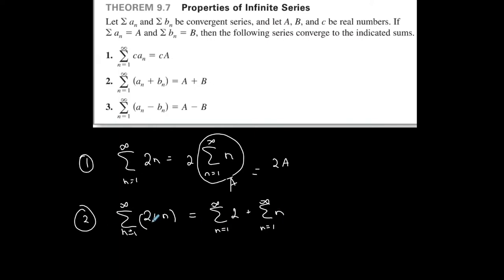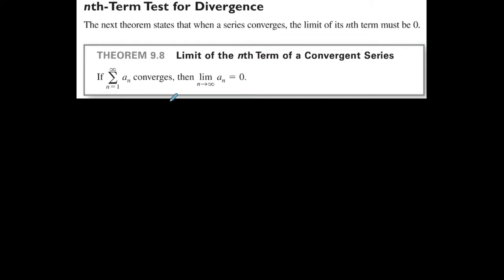Another test is the nth Term Test for Divergence. This states that when a series converges, the limit of its nth term must be zero: if the series converges, then lim(n→∞) aₙ = 0. This implication goes one direction — if the limit is not zero, the series diverges. But if the limit is zero, the series likely converges, though there are special cases where it does not.